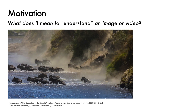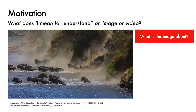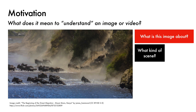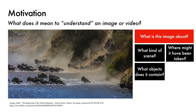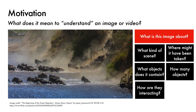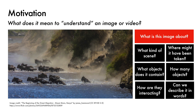We'll begin by asking ourselves what we are doing. What does it even mean to understand an image or video? Consider this example, and let's take a moment to ask ourselves what kinds of questions an intelligent research assistant or algorithm might be able to answer about this image. Some examples include: what kind of scene are we seeing? Where might the photo have been taken? What objects does it contain? How many of those objects are there? How are those objects — in this case wildebeest — interacting? Can we describe these interactions in words? A significant area of active research simply focuses on trying to work out what the right questions to ask are. So if you have any creative ideas for new questions, you may already be on the verge of publishing a computer vision research paper.